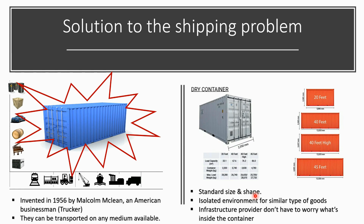These containers acted as isolated environments for similar types of goods. You can put all your explosives in one container and all your beer barrels in another. The infrastructure provider doesn't have to worry about what's inside the container — he just has to transport the container as a unit. This invention changed the way of trucking in America back in the 1960s.